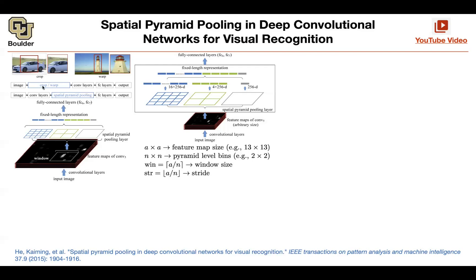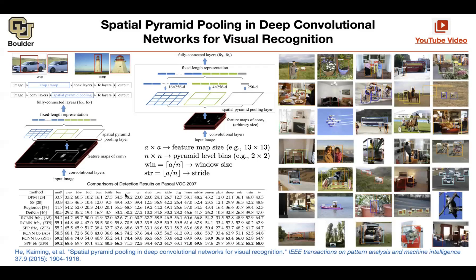The idea is: you don't need to crop and warp, and you don't need to call your convolutional layers thousands of times. Just push your image through the convolutional operation once, stop at the feature layer, and from that point on do these pooling operations thousands of times. This ends up being much faster — that's how you save computation.